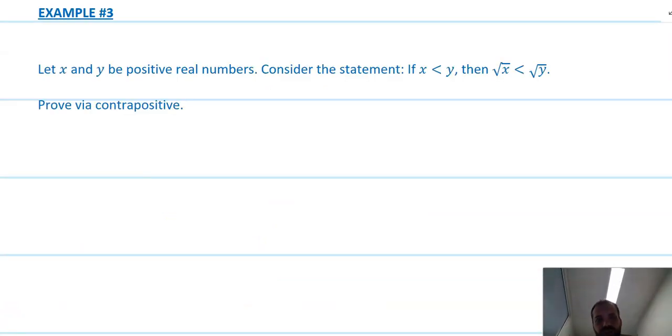We're going to prove this one by contrapositive. Let X and Y be positive real numbers. Consider the statement: if X is less than Y, then root X is less than root Y. So if P implies Q, then we can write not Q implies not P.